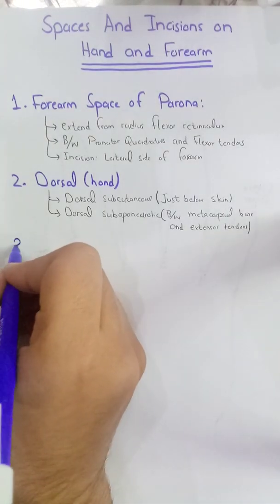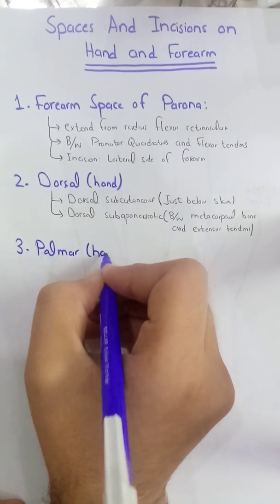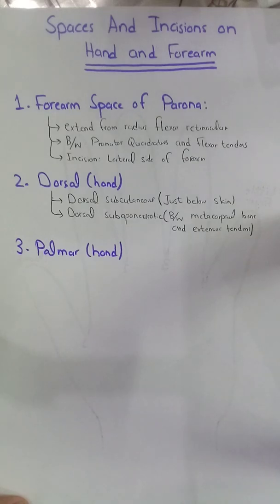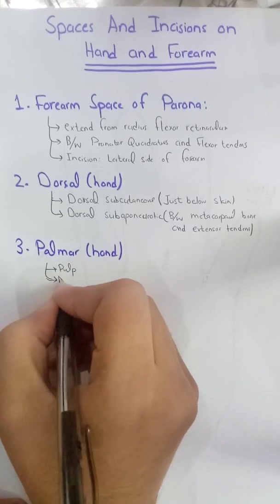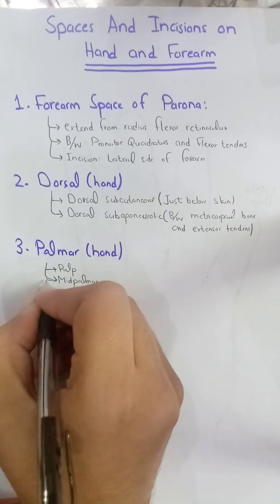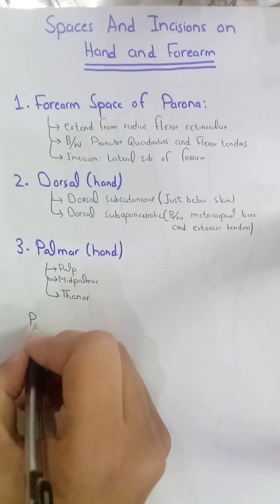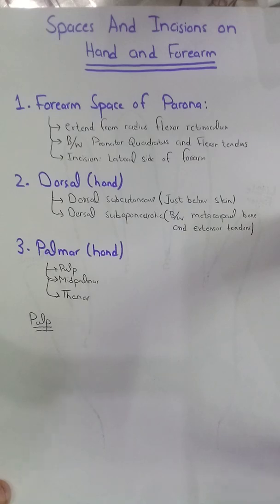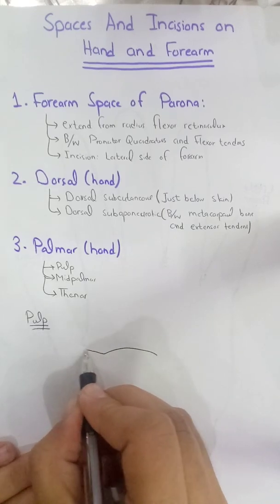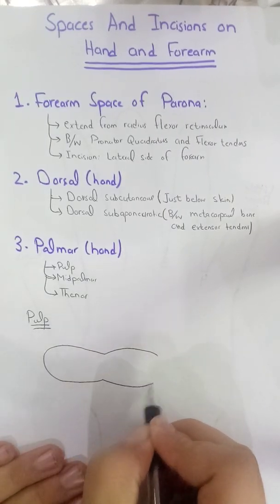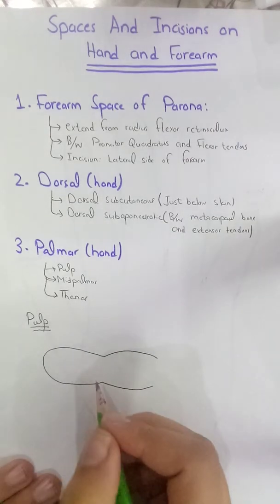Now we will move toward the palmar spaces, which are on the palmar side of the hand. There are three spaces: the pulp space, the mid palmar space, and the thenar space. To discuss the pulp space we will draw a finger, showing the last two phalanges.